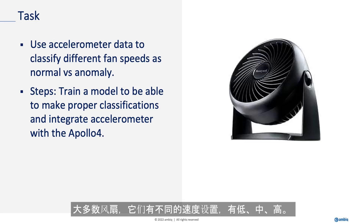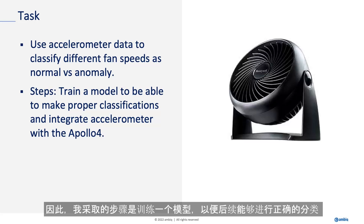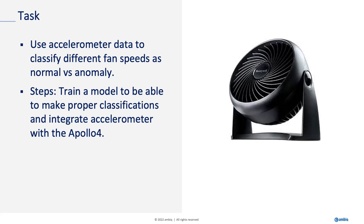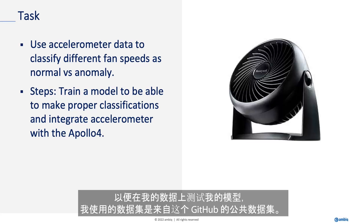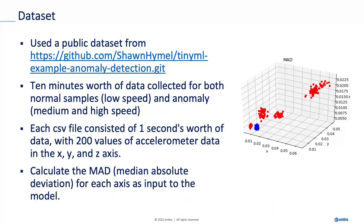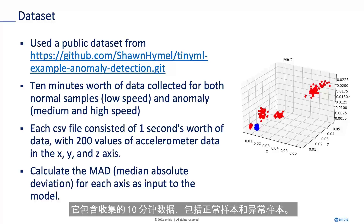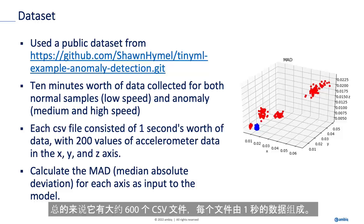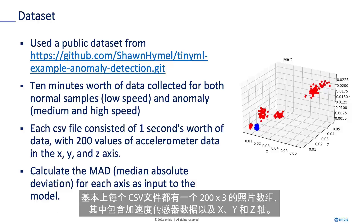Most fans have different speed settings — low, medium, high. I considered the lowest speed of the fan as normal and everything else as an anomaly. The steps I took were to train a model to make the proper classifications and then to integrate the accelerometer with the Apollo 4 in order to test my model on live data. The dataset I used was a public dataset from GitHub. It contained 10 minutes worth of data for both normal samples and anomaly samples — around 600 CSV files, each one consisting of one second's worth of data, with a 200 by 3 array of floats containing accelerometer data on the x, y, and z axes.